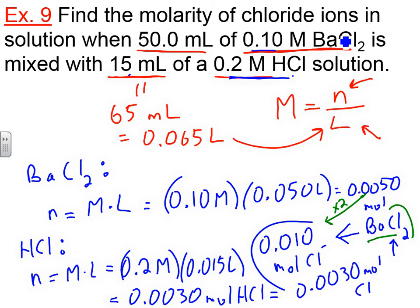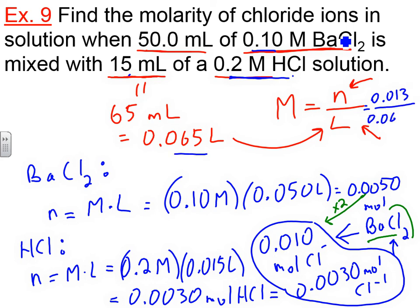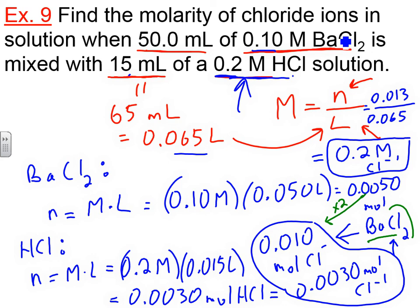Now we put them together and divide by our total liters. Total moles of Cl⁻ = 0.010 + 0.003 = 0.013 moles. Total liters = 0.065. Dividing 0.013 by 0.065 gives a final molarity of 0.2 molar for chloride ions. With one significant figure, the answer is 0.2 — which interestingly matches our HCl solution's concentration. That is how you solve a mixing problem when you have two solutions combined and need to track a specific ion.